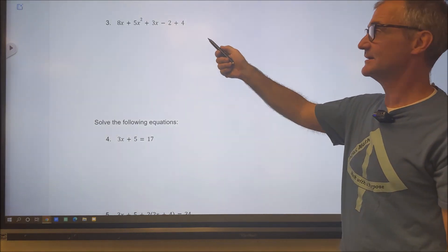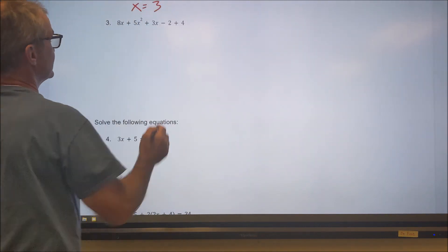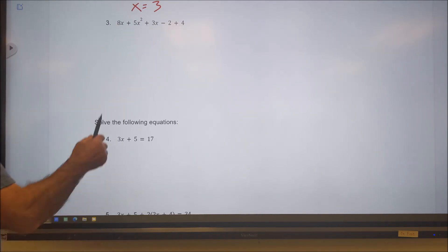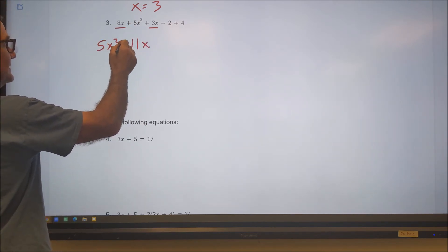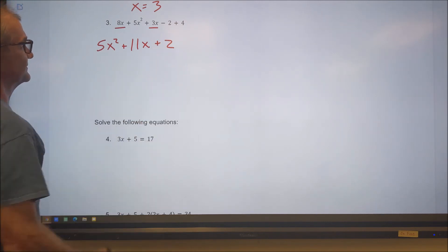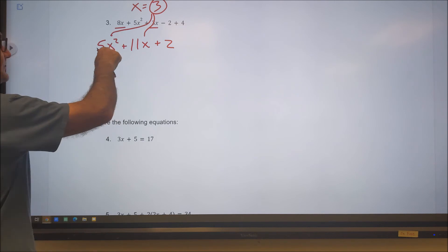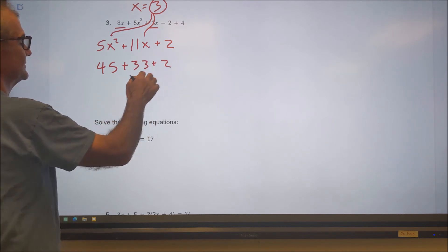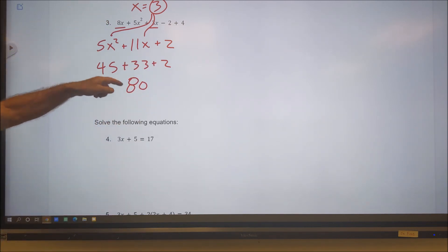Here's another one. Here's an expression. There is no equal sign. The directions say evaluate this expression when x is equal to 3. I'm just going to combine similar terms. 8x and 3x is 11 apples. And then this is 5x squared still. And then negative 2 plus 4 is positive 2. Now that I have my similar terms combined, I take that value of x and I plug it in. I've got to do my exponent first. 3 squared 9, 9 times 5, 45. 3 times 11, 33, plus 2. 45 and 33 is 78. 78 and 2 is 80. So evaluate that expression when x is equal to 3. My solution is 80.